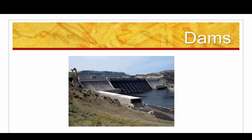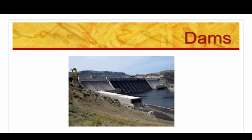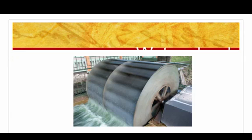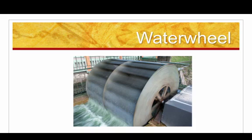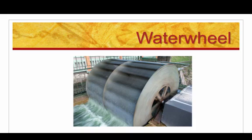Dams have been in existence since 3000 BC and are located all over the world. They use a structure to stop water movement so the flowing water's energy can be used to provide energy. This next slide is that of a water wheel. Like the windmill, water wheels have been around for hundreds of years. Their use is diminishing now — at one time, water wheels were used to power machinery like mills.